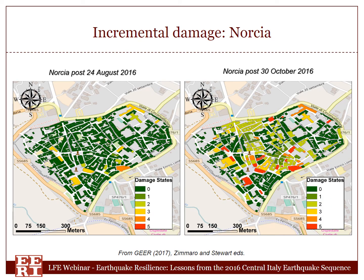This is Norcia — again, the same strategy, with two maps after 24 August and after 30 October. But Norcia, despite being very close by all three epicenters, did not experience a lot of collapses. There was some incremental damage accumulation as a result of the whole sequence, but after the 30 October event, only a few structures collapsed. The next presentation will show something about the reason why Norcia behaved like that.